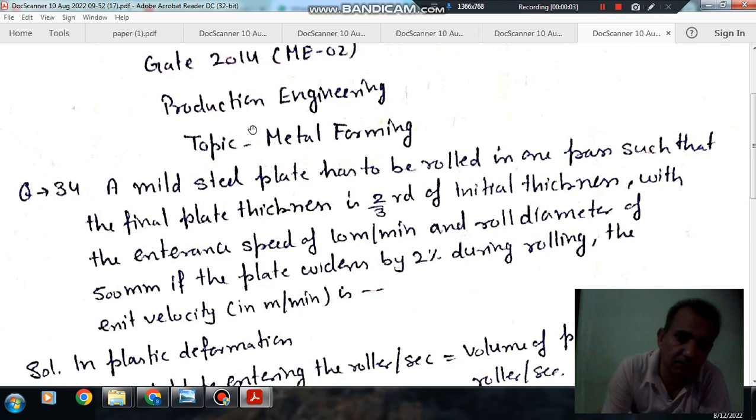Hello, welcome again. We are solving some questions on production engineering. The topic is metal forming. Question number 34 from Gate 2014 ME-02: A mild steel plate has to be rolled in one pass such that the final plate thickness